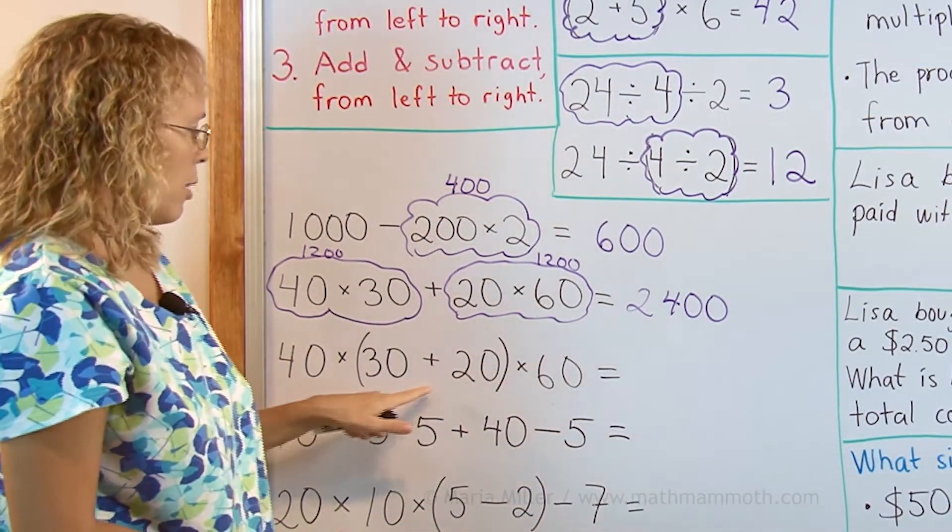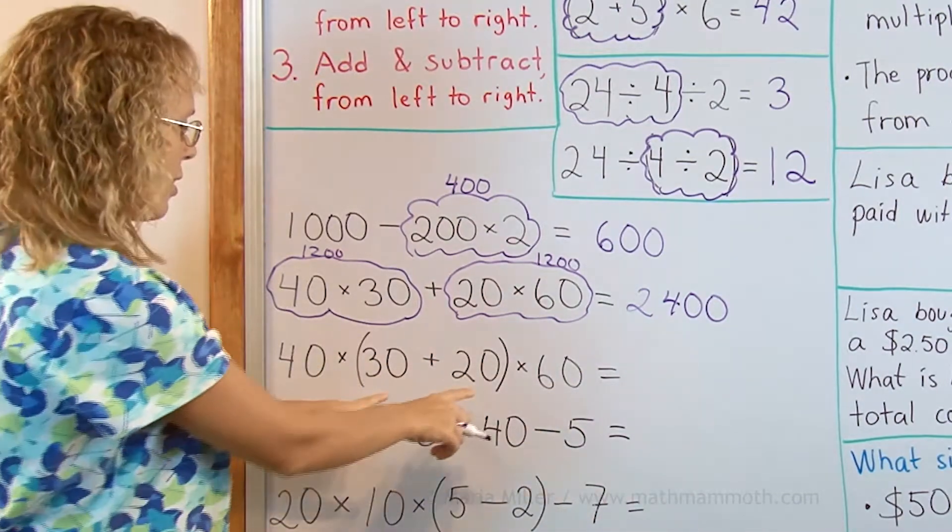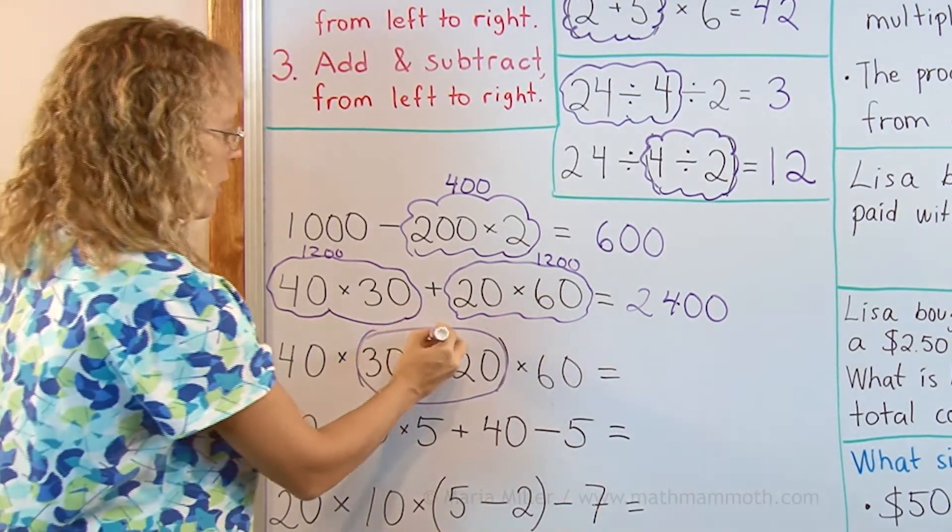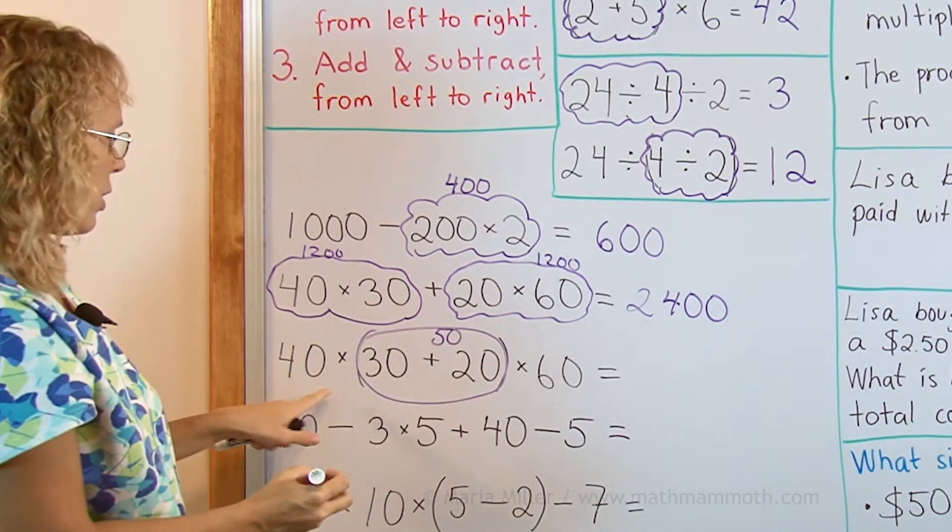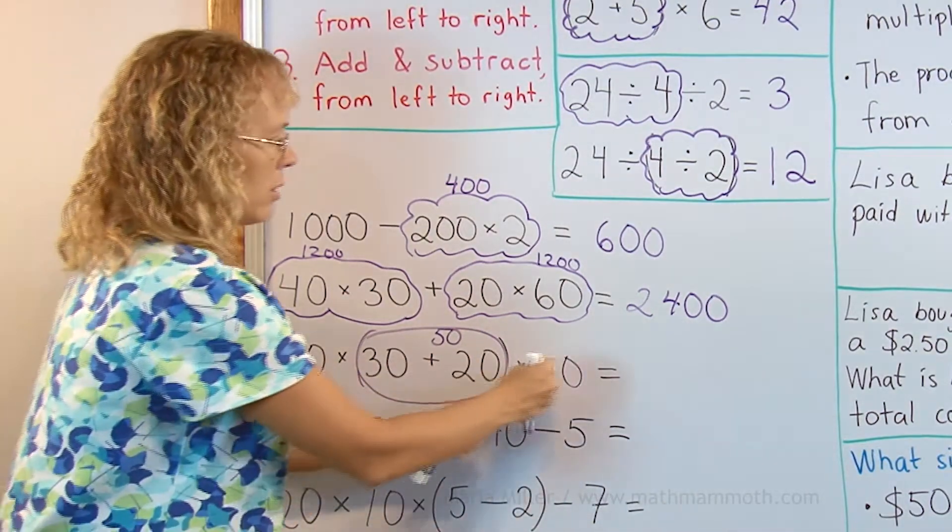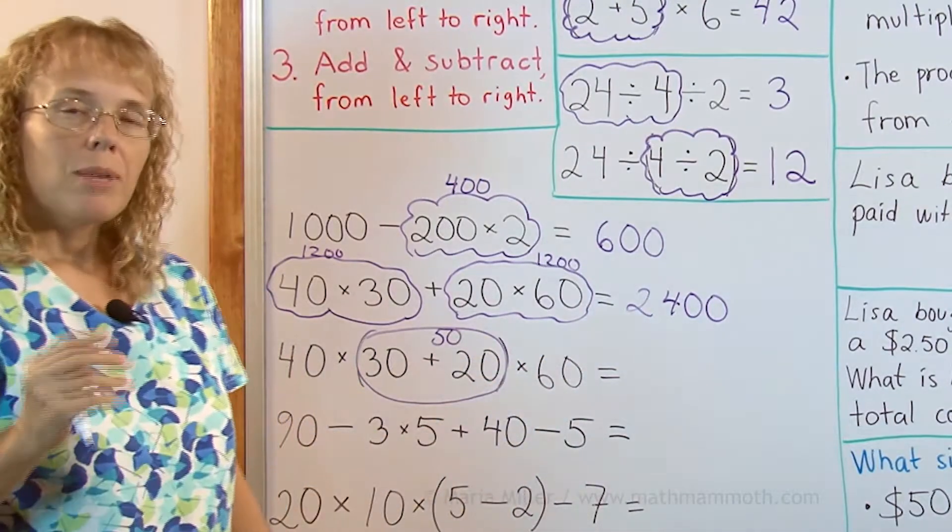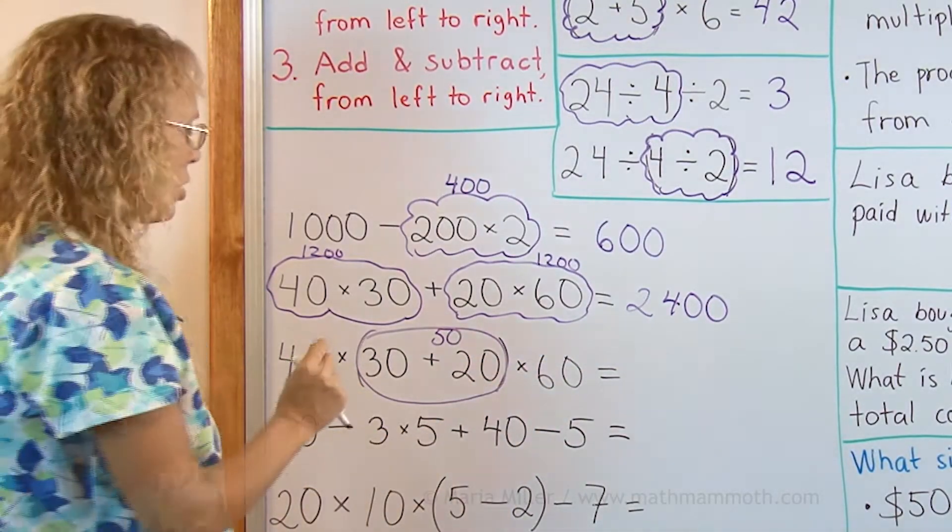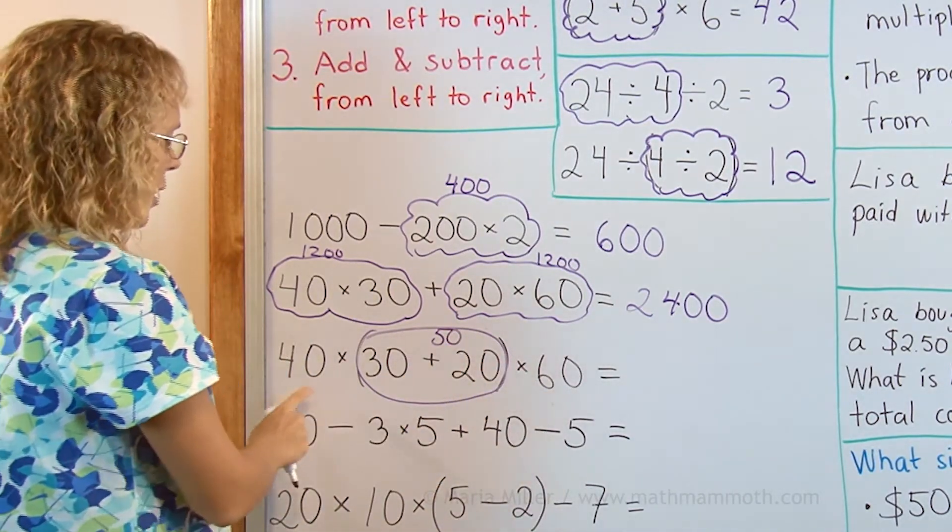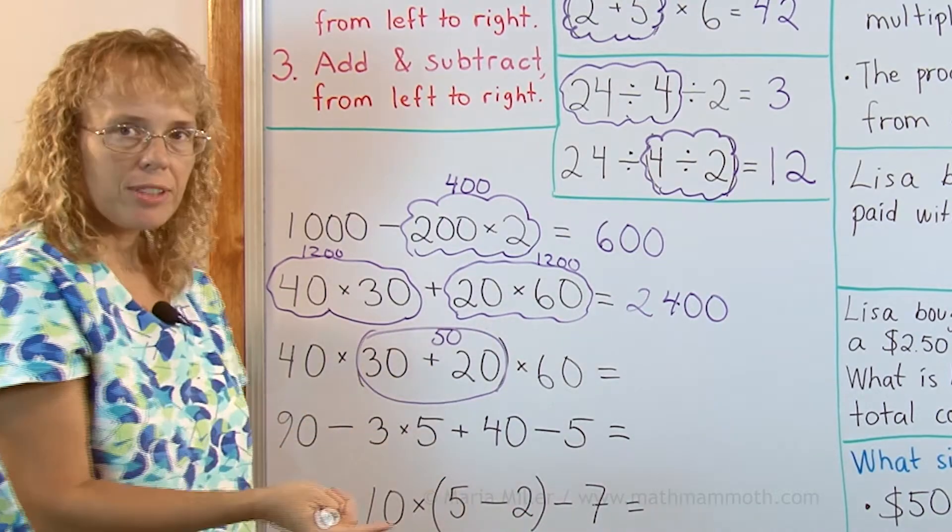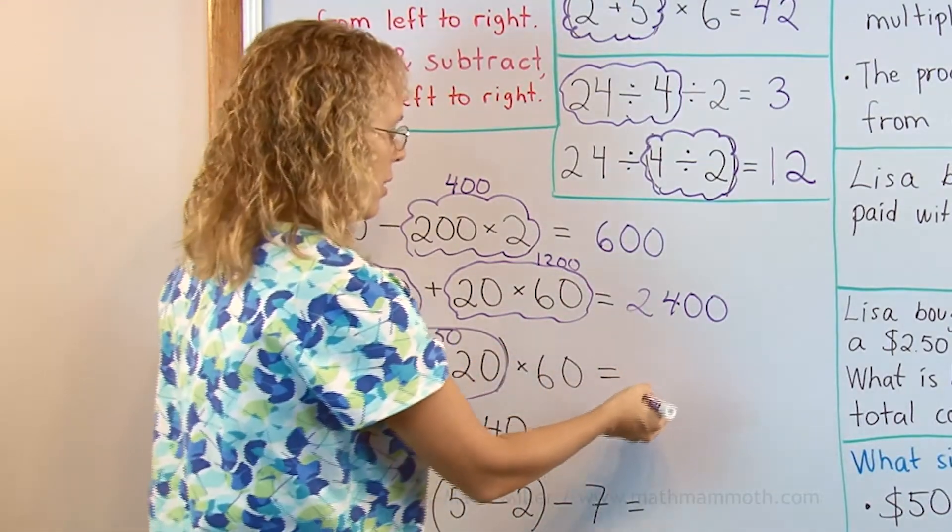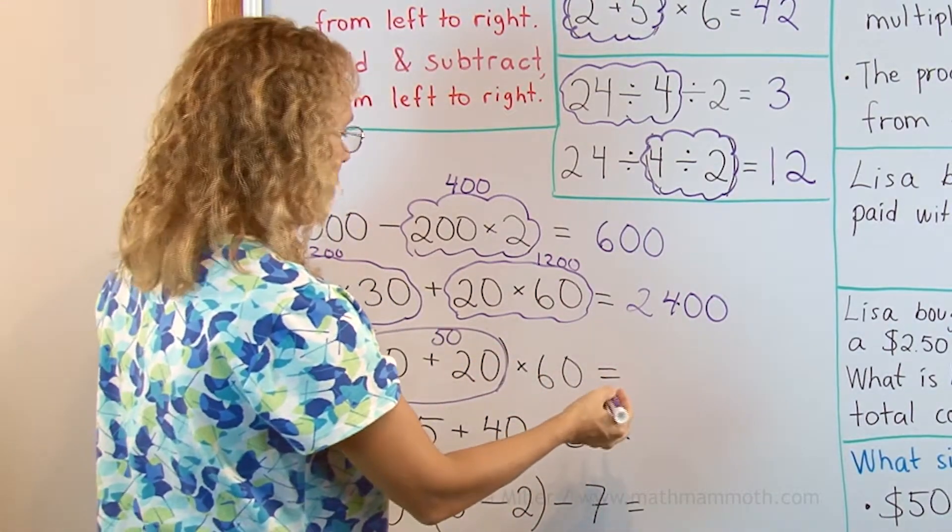Now 40 times 30 plus 20 times 60, but now there is parenthesis here. So that is done first. 30 plus 20 done first, that is 50. And then there's 40 times 50 times 60. It's multiplication. We can do it from left to right, but multiplication is special that you can actually do it in any order. It's equally easy to multiply 40 times 50 which is 2000 and then times 60 which will be 120,000.